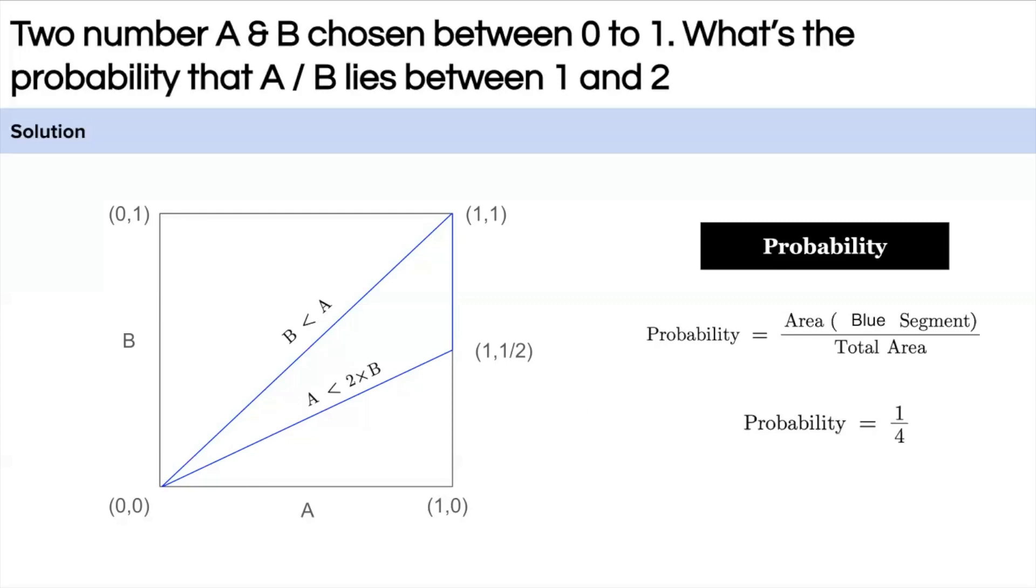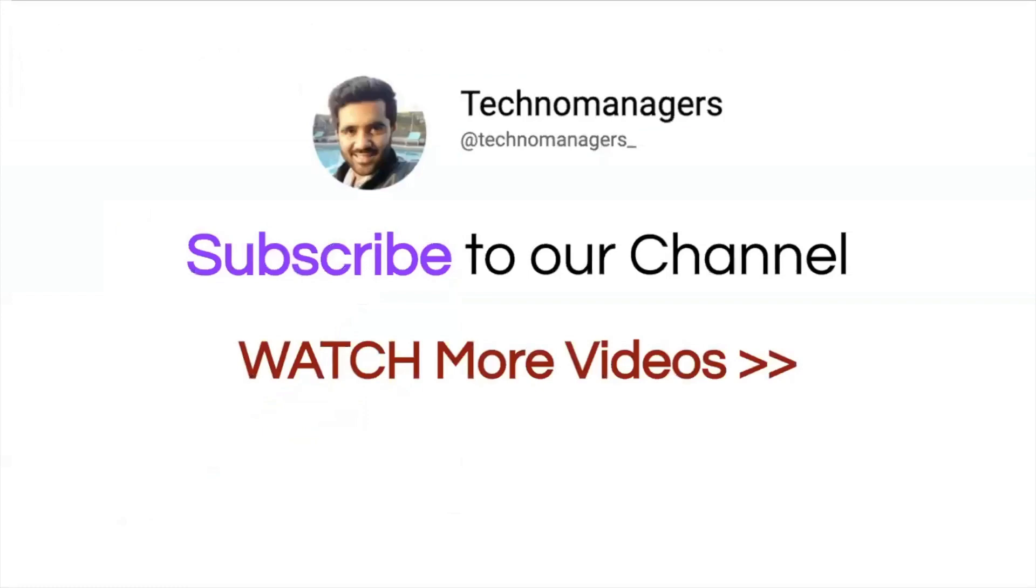So, the probability of A by B lies between 1 and 2 is 1 by 4. I hope you have learned something new from this video. I will meet you on to the next one. Till then, keep learning and keep watching.